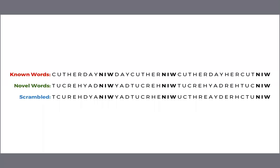We tested three different kinds of patterns. In all three conditions, the sequence N-I-W appeared as a reliable pattern. In the known words condition, we also included three English words: day, her, and cut. In the novel words condition, we used those same three English words but they appeared backwards. And in the scrambled words condition, we used the same letters but they didn't appear in a reliable order.